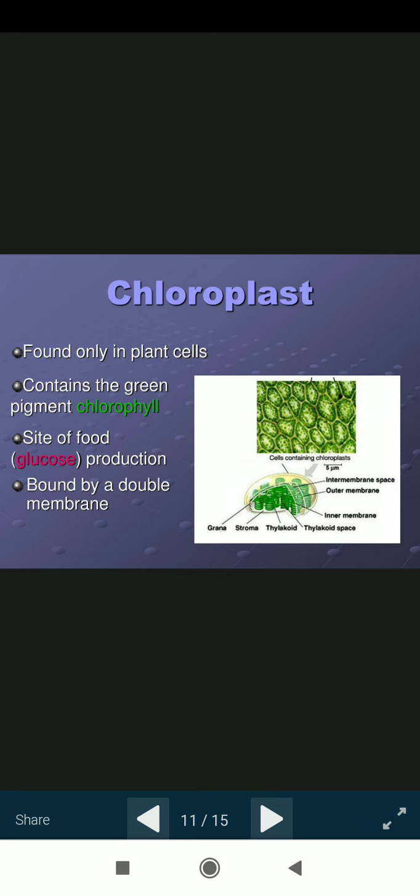Then the chloroplast. Chloroplast is another important organelle of the plant cell. Found only in the plant cell. Contains the green pigment chlorophyll. Chloroplast is also having two membranes: outer membrane and inner membrane. Inside the inner membrane, inside the chloroplast, the grana are present.